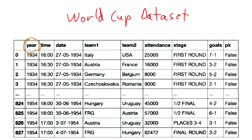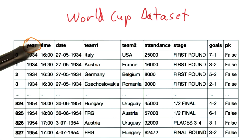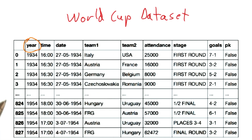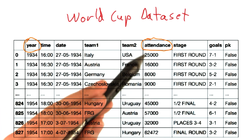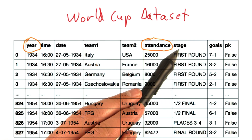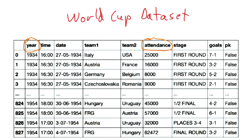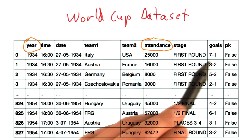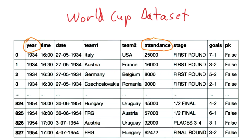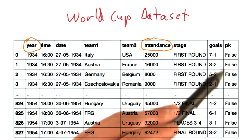Here we have the year of the World Cup in which the game was played, the time the game happened at, the full date including the day and the month, the two teams that played — team one and team two — the number of people who attended the match in person at the stadium, which stage of the World Cup the match occurred in, the final score of the game, the first number representing team one's score and the second number representing team two's score, and whether or not the game went to penalty kicks.